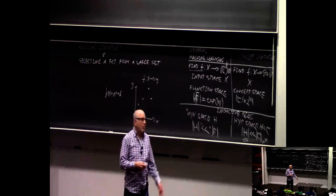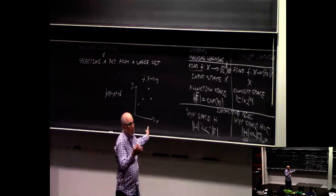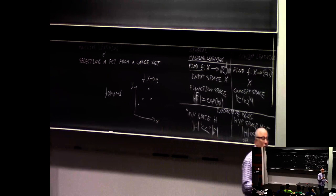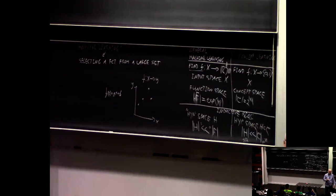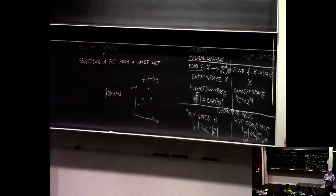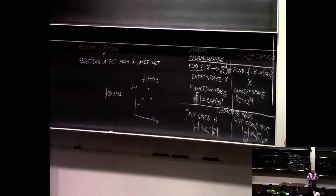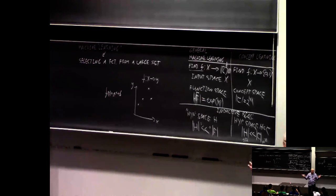What about weaker assumptions? Continuity is an example of a much weaker assumption, but still extremely strong — the vast majority of functions are not continuous. If you draw a function at random by picking a random Y for every X, you're pretty much guaranteed not to get a continuous function. Just by assuming continuity, you reduce the space significantly — but it's still an extremely large space, with infinitely many continuous functions.